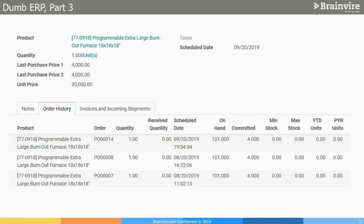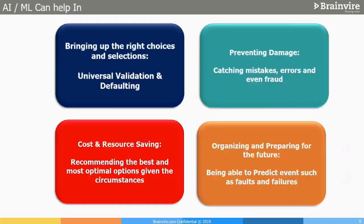There are many such things available — data we use day-to-day in business but still don't act on. These are not the 'rocket science' machine learning things yet; these are the common sense optimizations. But they can help with making the right choices, preventing damage, better inventory management, better sales cycles, and organizing and preparing for the future — it's all about predictions.